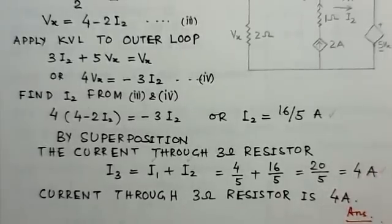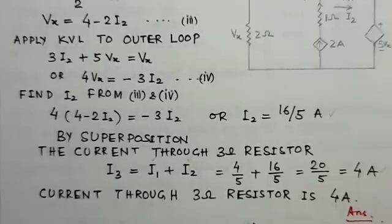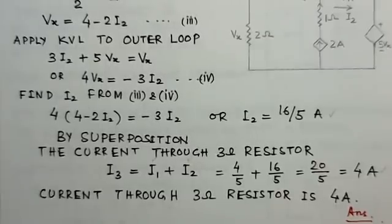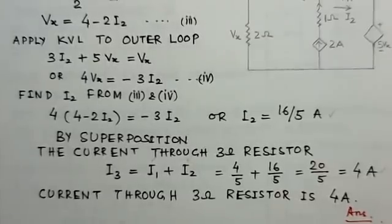This particular problem has considered a case where both dependent and independent sources are present, and how to determine the current through a particular element in the network using the principle of superposition. Thank you.